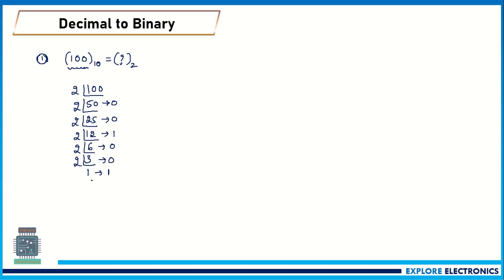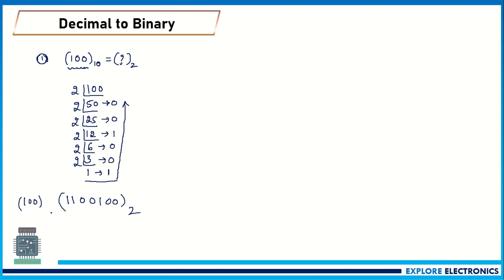We need to read these remainders from bottom to top. Reading bottom to top gives us 1100100 — this is the binary equivalent of decimal 100. This is how we convert any decimal number to binary.